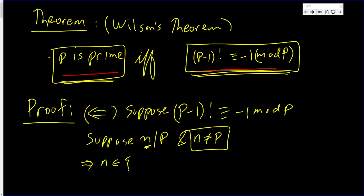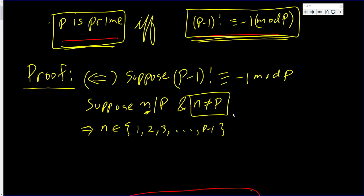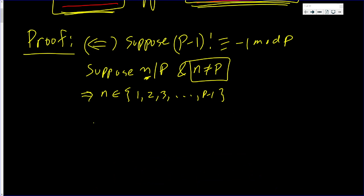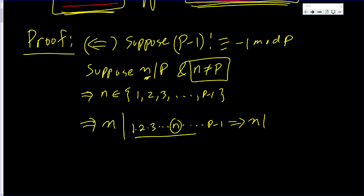n can only be one of the numbers 1, 2, 3, ... up to p minus 1 — we want n to be less than p. If n is one of these numbers, then n is actually going to divide 1 times 2 times 3, and eventually we'll hit n, all the way up to p minus 1. n will divide this because n is one of the factors. So n divides p minus 1 factorial.